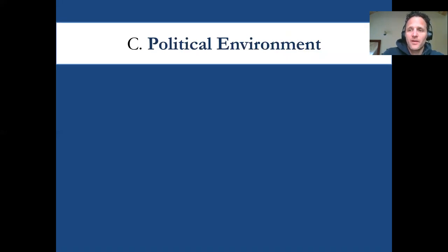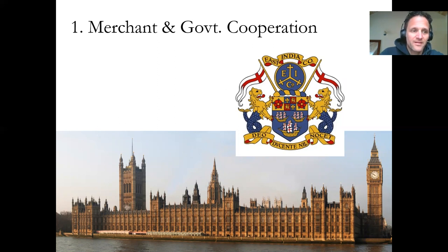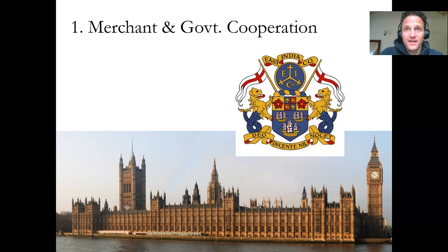Historians also suggest that the political environment in England made it easier for the Industrial Revolution to begin. Many history books, including Strayer, suggest that Britain's political environment was conducive to commerce, trade, and innovation because there was a lot of cooperation between the merchant class, joint stock companies, and the government. Unlike other parts of Western Europe, Britain had an early political revolution in 1688 — 100 years before the French Revolution — which limited the power of the monarchs and gave more power to the people. This political revolution also encouraged more religious tolerance, attracting innovative people who were leaving mainland Europe, like from Holland, and moving to Great Britain.